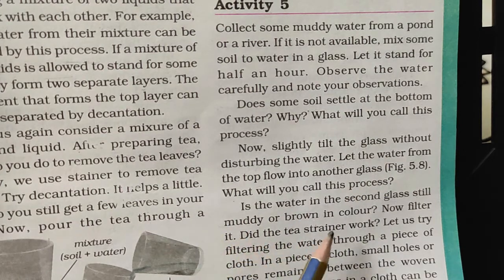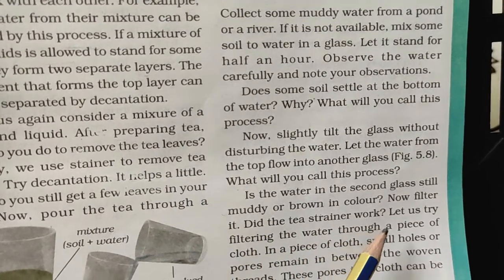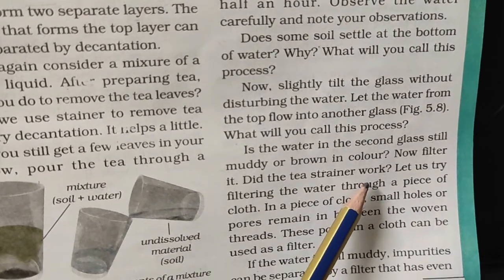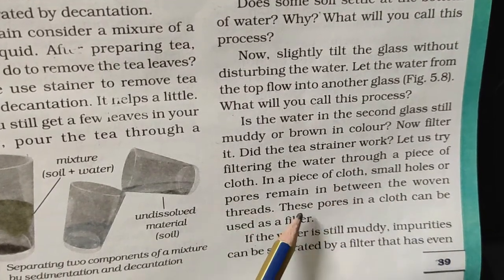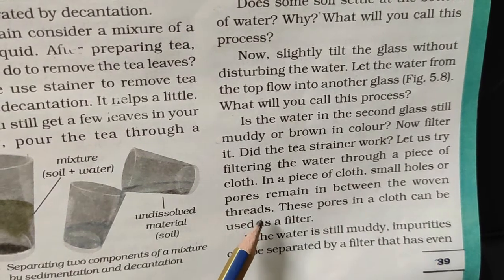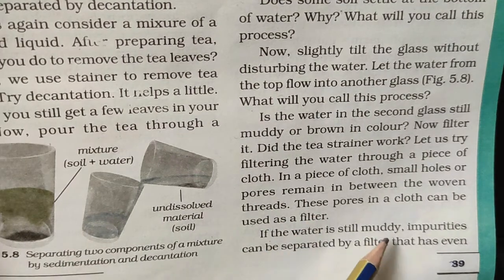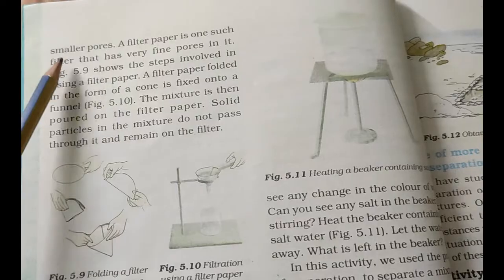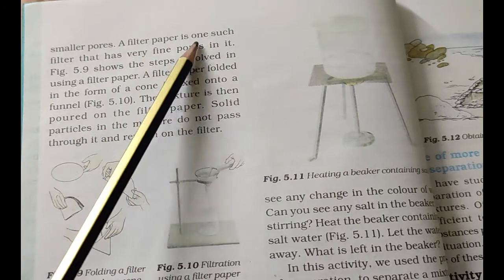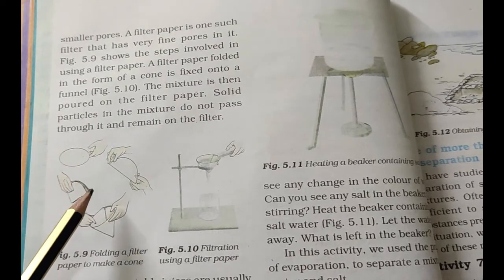Now filter the water. Filtration means using a filter — like a tea strainer. Let's try filtering the water through a piece of cloth. Small holes or pores remain between the woven threads, and these pores in the cloth can be used as a filter. If the water is still muddy, impurities can be separated by a filter that has smaller pores.